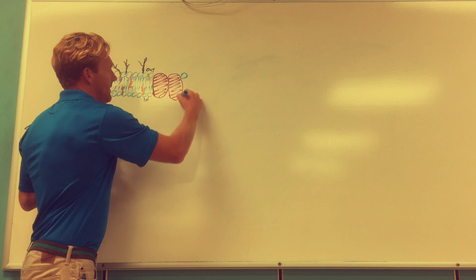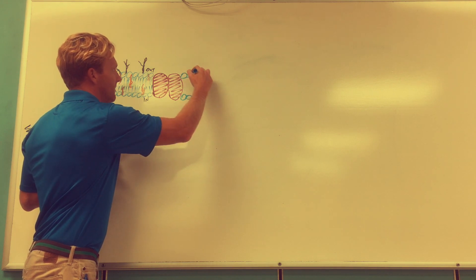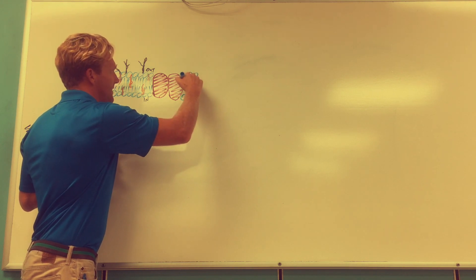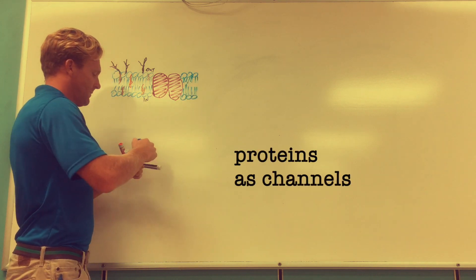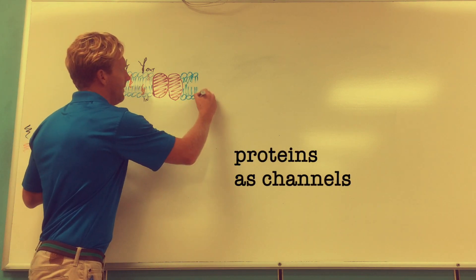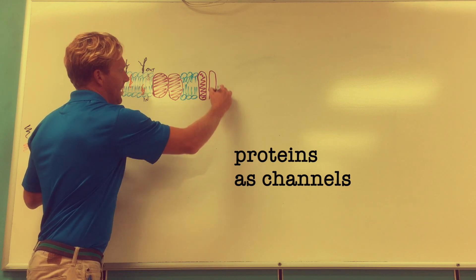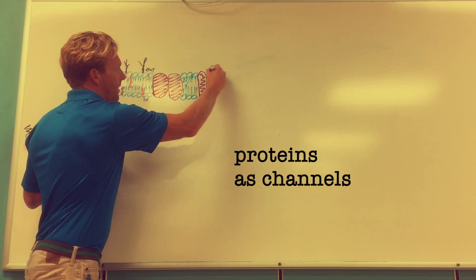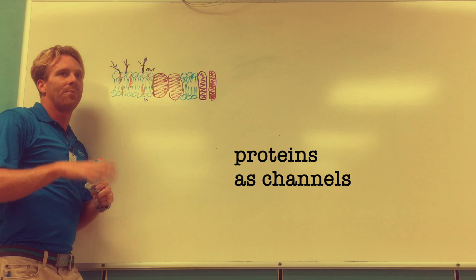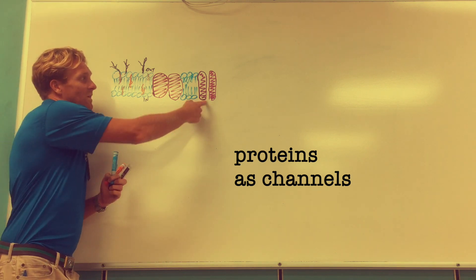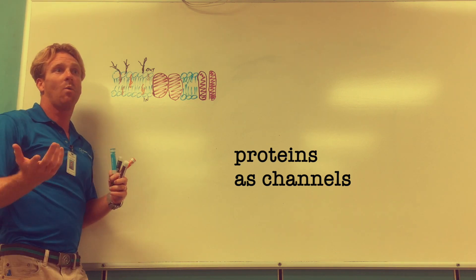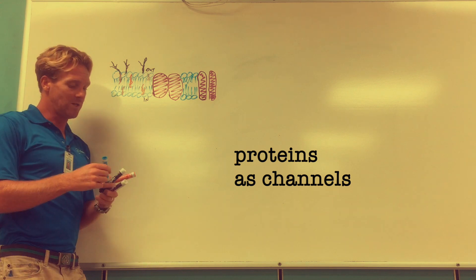Also, you'll find proteins in the cell membrane that act like channels. This could be a protein that has a little passageway in it that would allow a certain molecule or chemical to pass through. Aquaporin is one of these specialized proteins that allow water to pass through via osmosis.